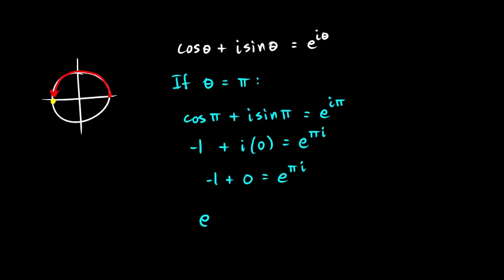More commonly written like this. e to the pi i plus one equals zero. And that little equation is known as Euler's identity. And that's the equation that the physicist Richard Feynman said was the most amazing formula in all of mathematics. And it really is an amazing equation.